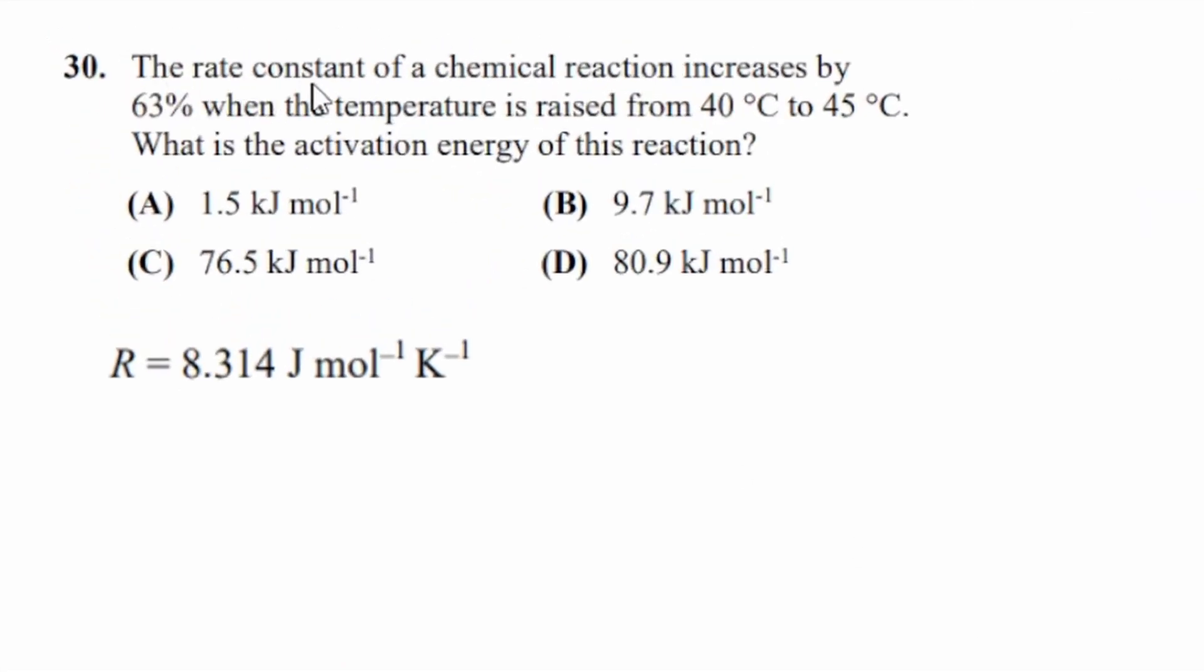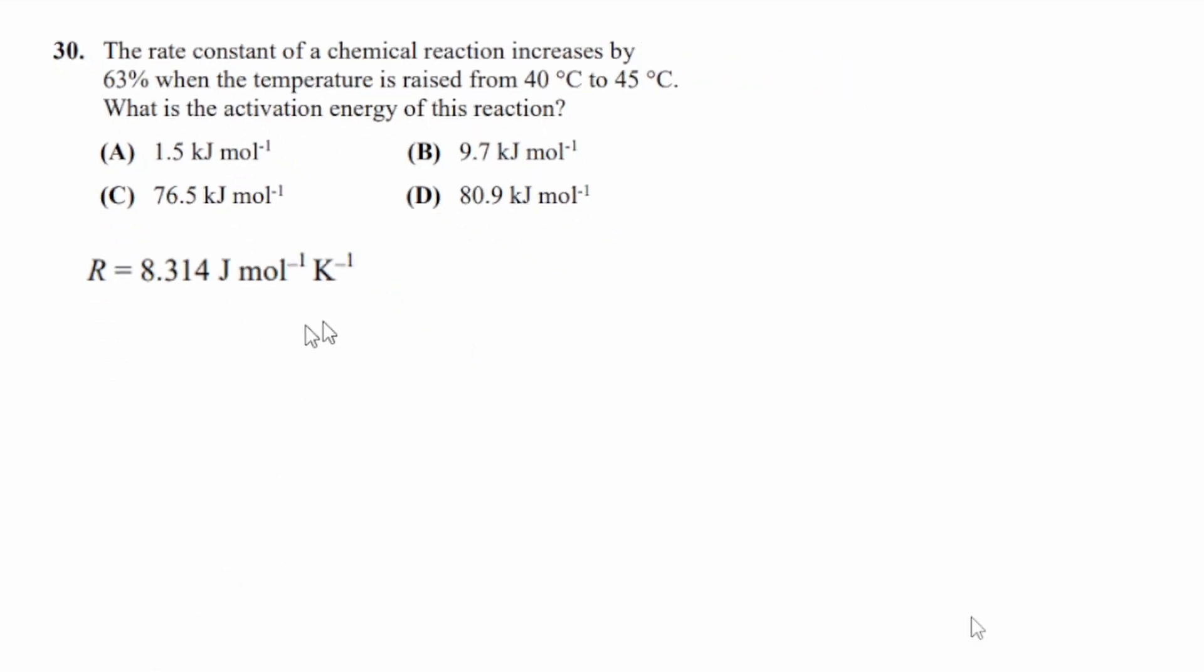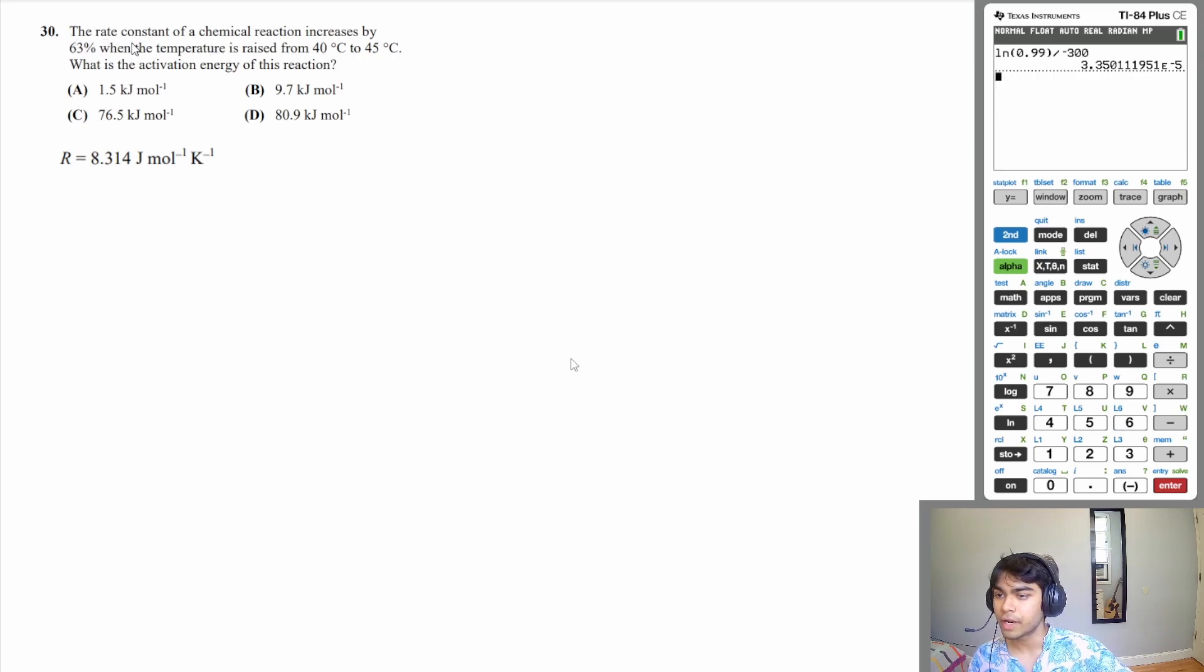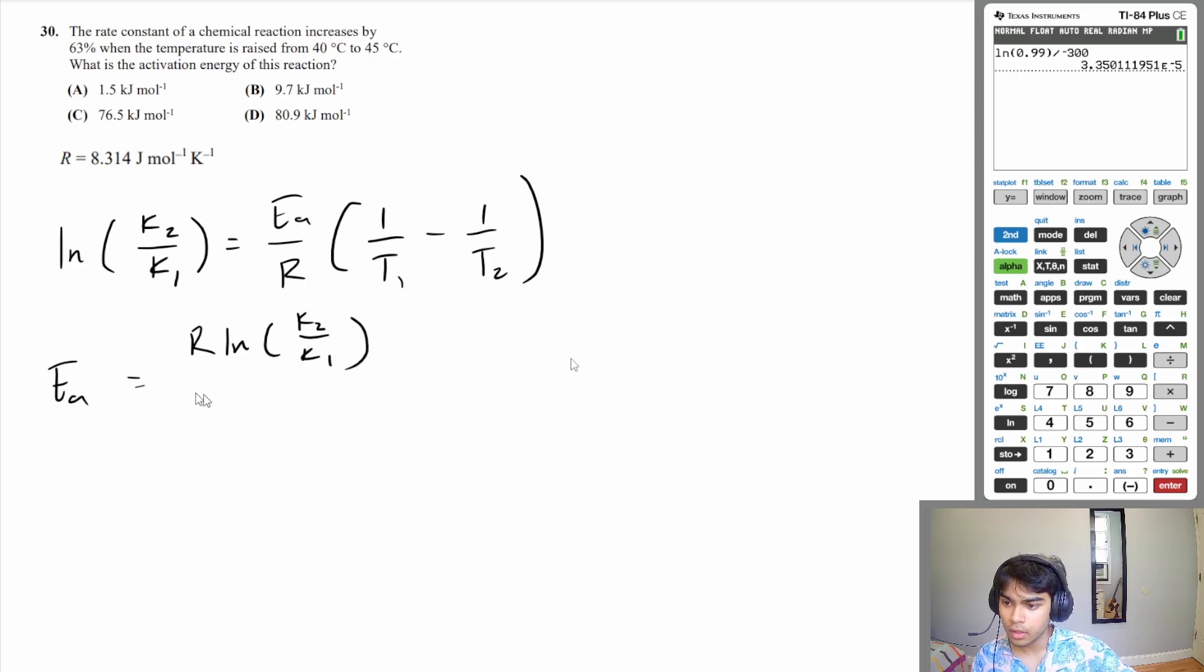Let's move on to our last question, 30. The rate constant of a chemical reaction is increased by 63% when the temperature is raised from 40 degrees Celsius to 45 degrees Celsius. What is the activation energy of this reaction? Well, since we're looking at the dependence of the rate constant with respect to temperature, the formula we want to use is that the natural log of K2 over K1 is equal to your activation energy over R times 1 over temperature 1 minus 1 over temperature 2. This equation will map out how your rate law or rate constant is dependent on temperature. Okay, so since we want to find the activation energy, let's isolate for Ea.